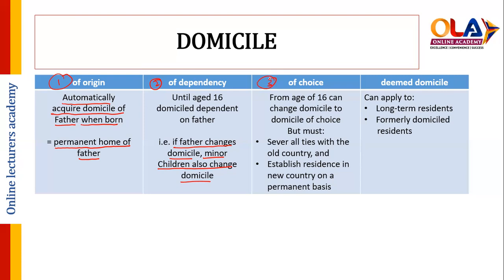The third category is domicile of choice. From the age of 16, a person can change their domicile to a domicile of choice. However, they must sever all ties with the old country where they originally had domicile and establish residence in the new country on a permanent basis — permanent basis is important to change your domicile by choice.